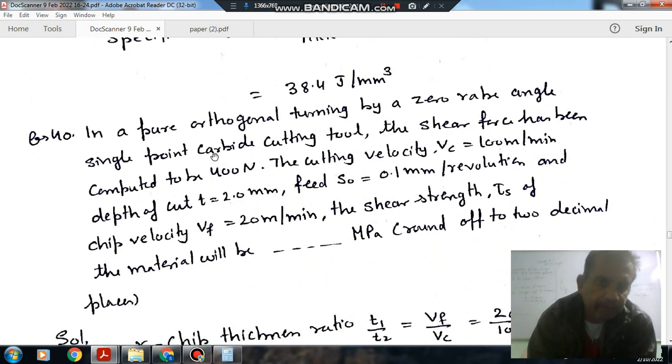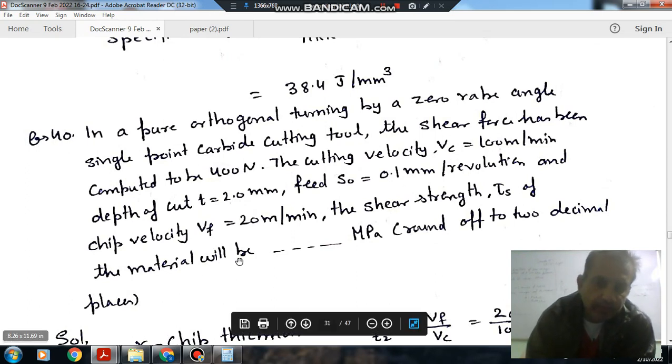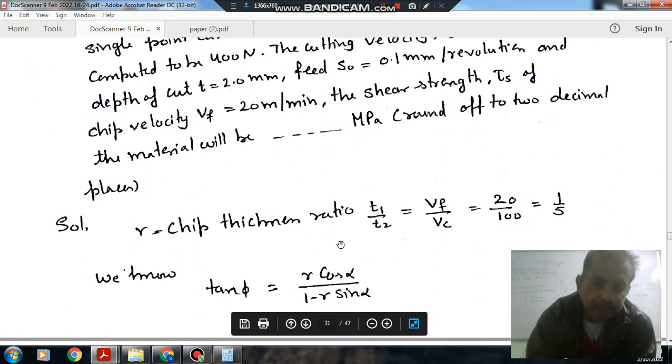Next question: In a pure orthogonal turning by a zero rake angle single point carbide cutting tool, the shear force has been computed to be 400N. The cutting velocity Vc, depth of cut D is equal to 2mm and feed S0 is equal to 0.1mm per revolution and chip velocity Vf is equal to 20m per minute. The shear strength tau S of the material will be blank MPa, round off to two decimal places.